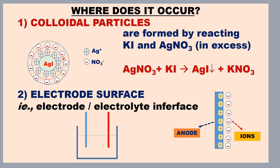This silver ion is attracted to the nitrate ion because nitrate is in excess, and another silver ion is similarly attracted to the nitrate ion. So it forms a double layer — this is one layer and this is another layer. Colloidal particles form an electrical double layer because they are charged.